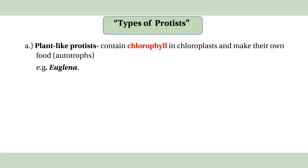The first type is the plant-like protists, which contain chlorophyll. Chlorophyll is a green pigment found in chloroplasts. Plant-like protists are autotrophic, meaning they can make their own food. This is called autotrophic nutrition, which is important for plant-like protists.